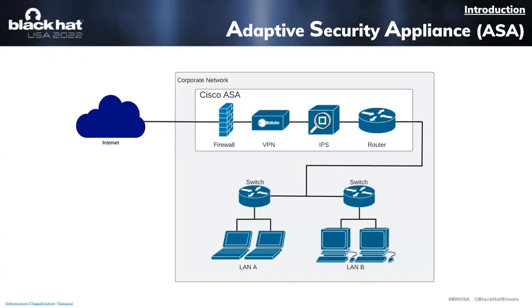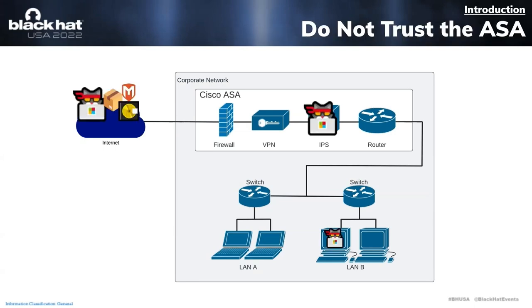An ASA typically sits at the edge of your corporate network, where it can be a firewall, a VPN, an IPS, and/or a router — possibly all wrapped into one. The ASA is a critical asset because it acts as the gateway between the internet and your corporate network and implements a variety of access controls and protections. This talk is called Do Not Trust the ASA because we're going to use features and vulnerabilities affecting the ASA to get root shells on the ASA itself, as well as the administrative systems that connect to it.